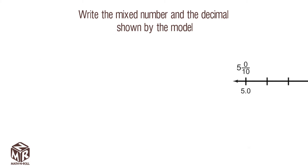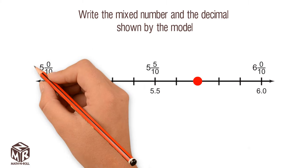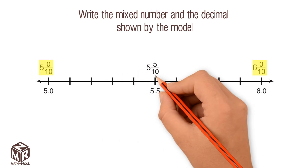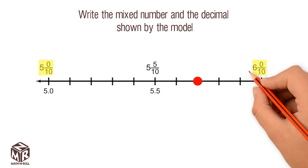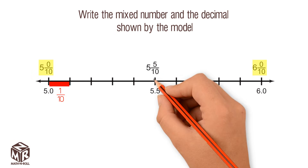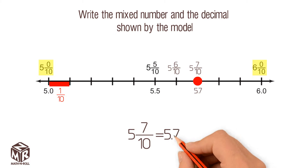Let's try another example. Write the mixed number and the decimal shown by the model. On the left side of the number line we see 5 and 0 tenths, or 5.0. On the right side we see 6 and 0 tenths, or 6.0. In between we have 10 parts. Each part represents 1 tenth. To find our point, we start from the middle because it's closer. From 5 and 5 tenths, we add 1 tenth one by one until we get to our point. So the red point represents 5 and 7 tenths, or 5.7. We can write 5 and 7 tenths as a mixed number and as a decimal.